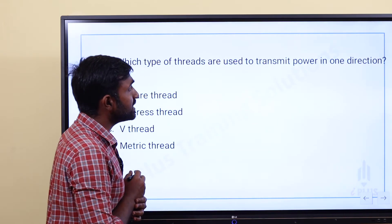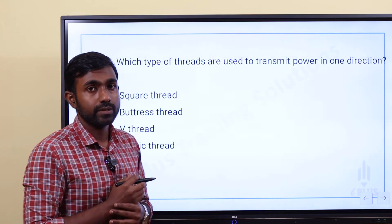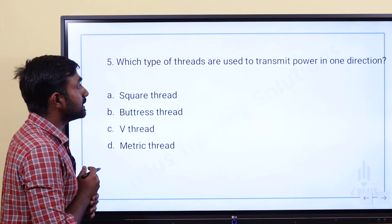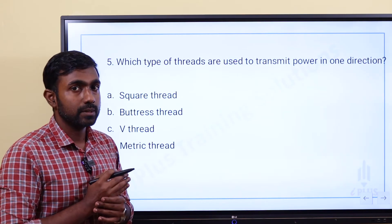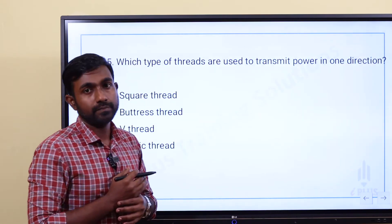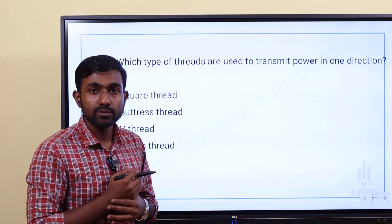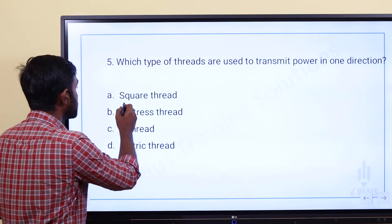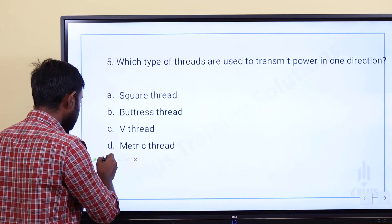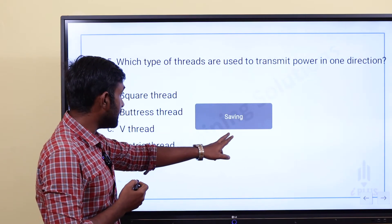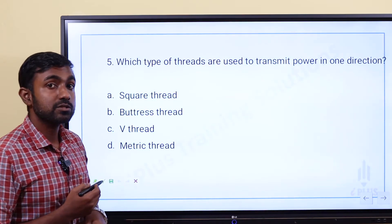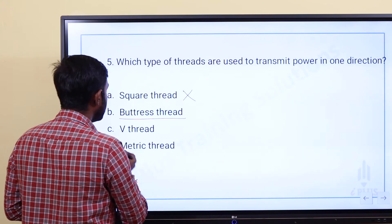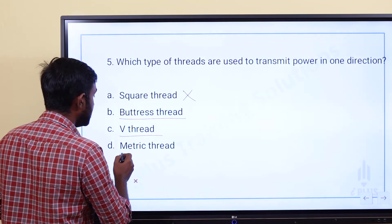Which type of thread is used to transmit power in one direction? Options include: Option A: Square thread, Option B: Buttress thread, Option C: V thread, Option D: Metric thread. For one-direction power transmission, the answer is Option B — Buttress thread.